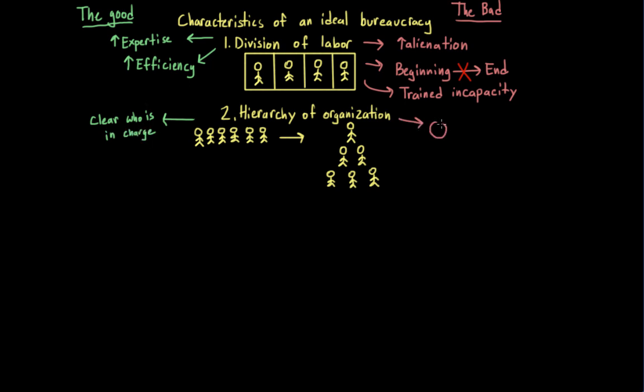But it can also deprive individuals of having a voice in decision-making, especially those who are lower down on the hierarchical chain. This structure can also allow people to shirk responsibility. And this is especially troublesome when it comes to unethical tasks. You may have heard of the term, I was just following orders.